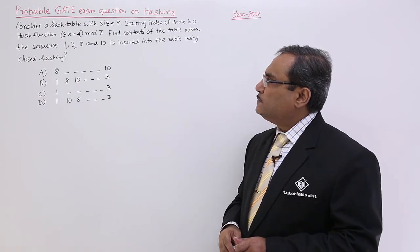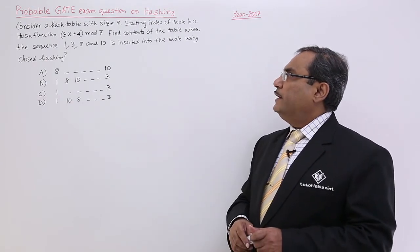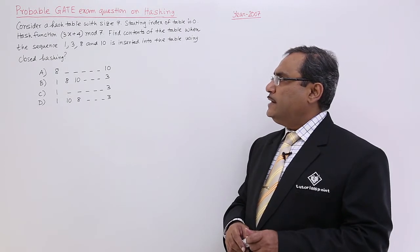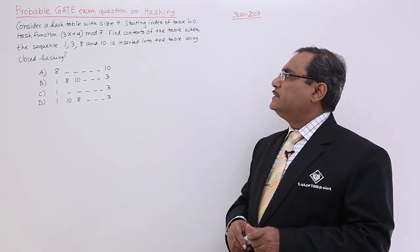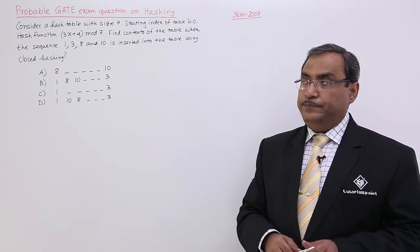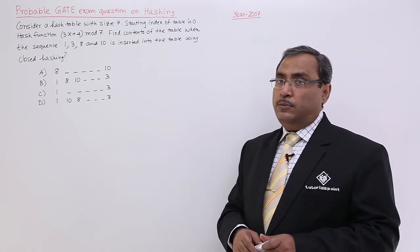Hash function is 3x plus 4 mod 7. Find contents of the hash table when the sequence 1, 3, 8 and 10 is getting inserted into the table using closed hashing. This is the problem we are supposed to solve.